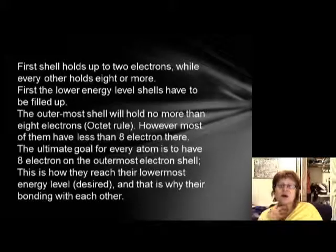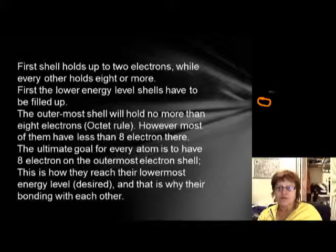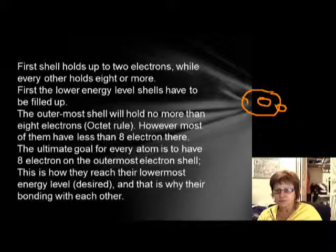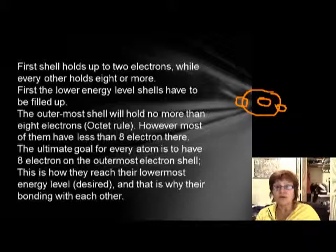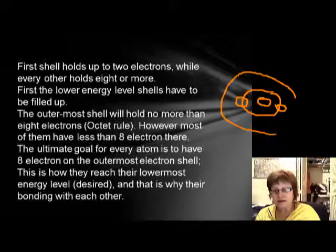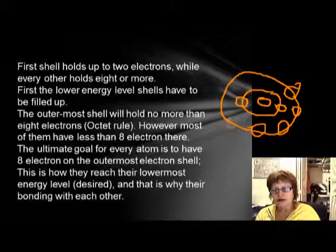Now let's talk about the electrons and electron shells. With the nucleus at the center, on the very first electron shell the maximum number of electrons is two. On the very second shell we have eight electrons — one, two, three, four, five, six, seven, eight. You don't need to go further into electron configuration for this course.